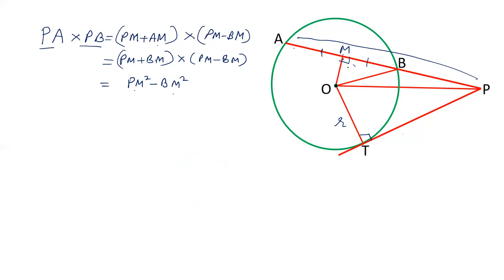We have two right angle triangles here. One is OPM. In triangle OPM, which is right angle, OP squared is equals to OM squared plus PM squared, and therefore PM squared is OP squared minus OM squared.